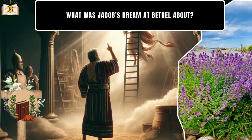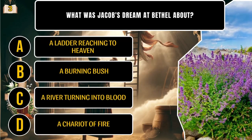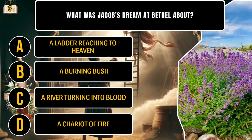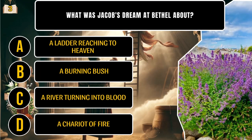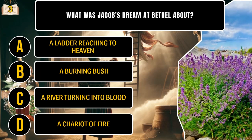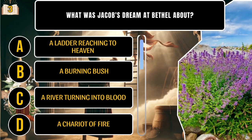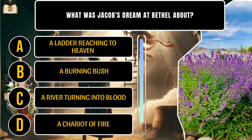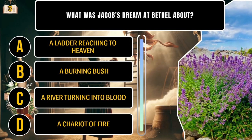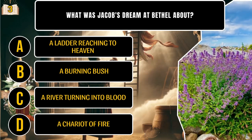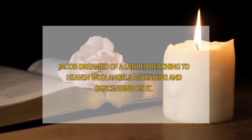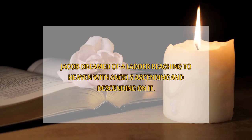What was Jacob's dream at Bethel about? A. A ladder reaching to heaven. B. A burning bush. C. A river turning into blood. D. A chariot of fire. That's A. Jacob dreamed of a ladder reaching to heaven with angels ascending and descending on it.